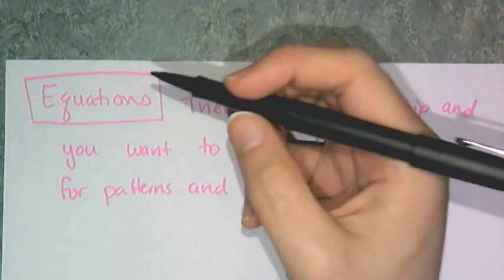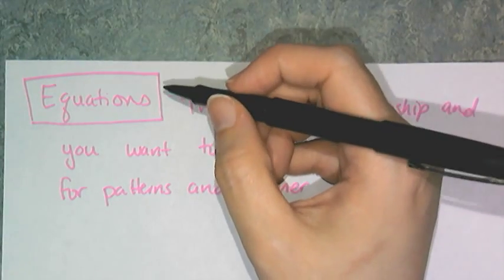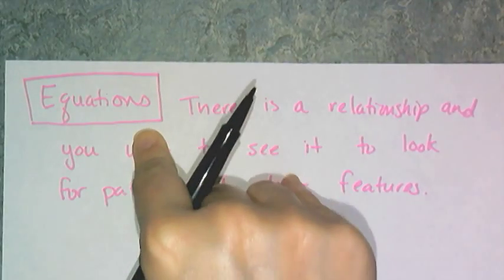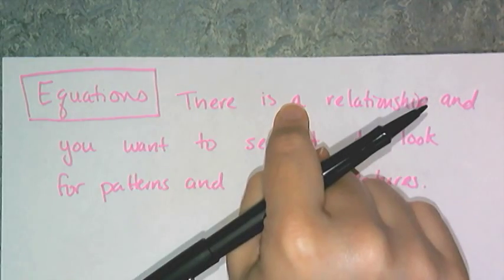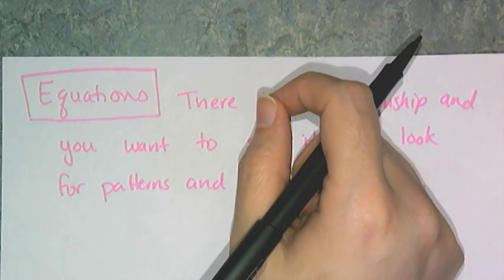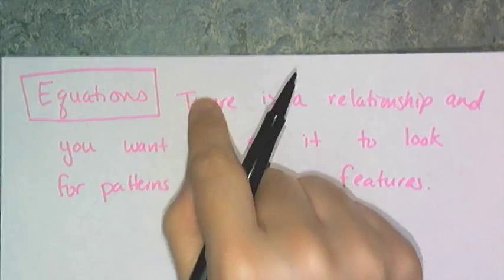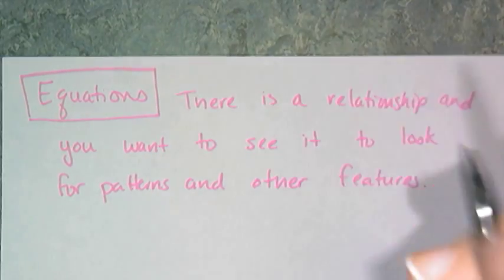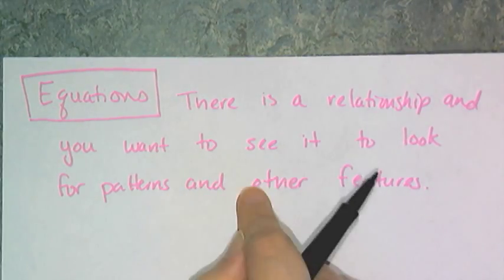Now the type of graph that we use most often in algebra is the graph of the equation, and here you know there's a relationship. It's the equation. And the whole point of the graph is for you to see a picture of that relationship, and that enables you to find patterns and special features.